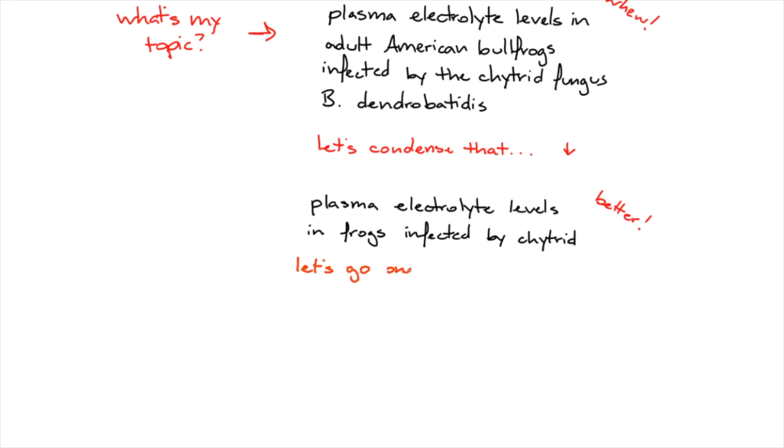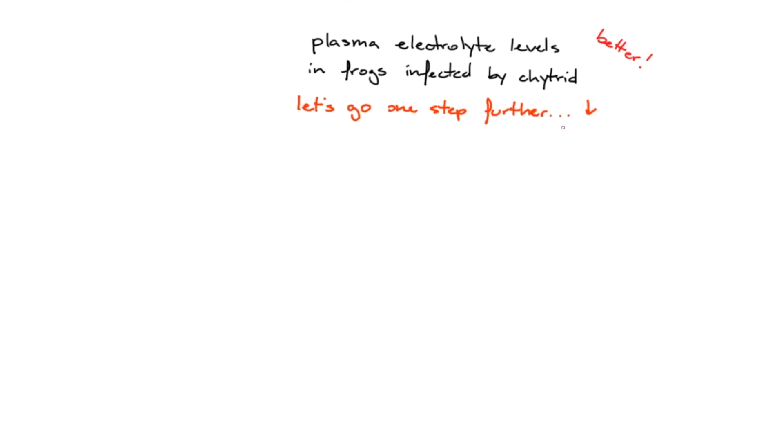Once you've distilled your topic, you're going to want to break it down into main concepts. Think about the big ideas, the main points you're going to be looking at. For my example, I would probably start with plasma electrolytes, frogs, and chytrid.